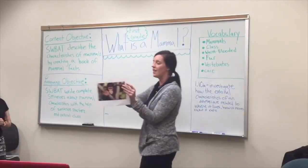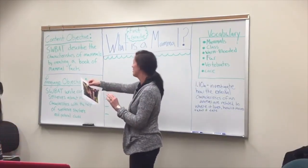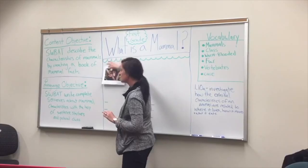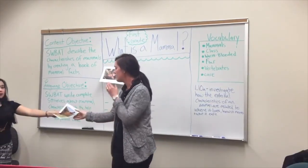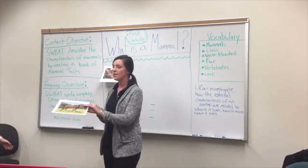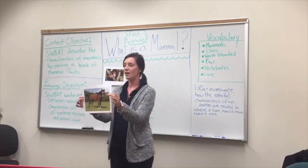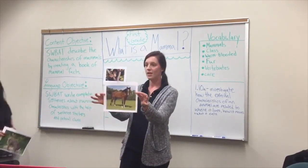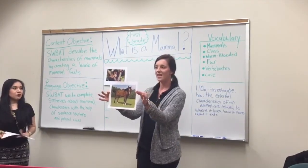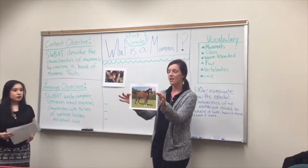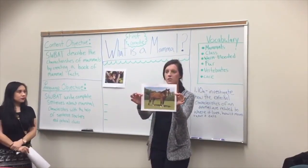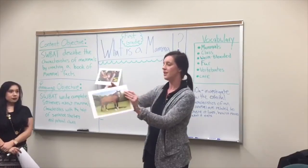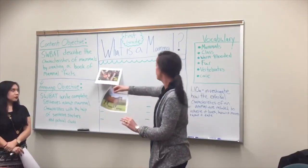Alright class, we are going to start today with me showing you five pictures of different animals. We're going to go one by one, and you're going to tell me what animal it is. So our first animal — what do you see here in this picture? It's a monkey. A monkey in a tree. Very good.